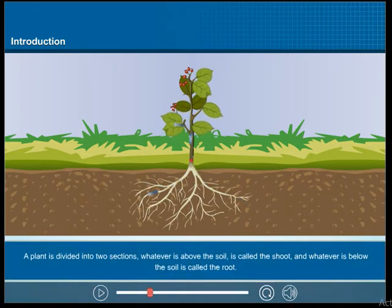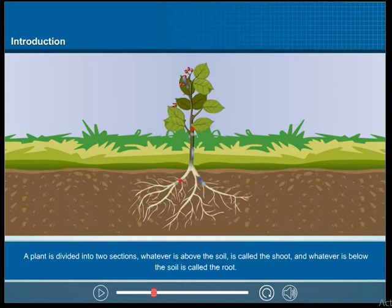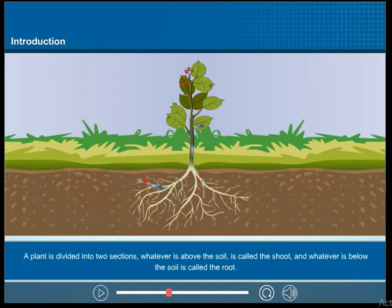A plant is divided into two sections. Whatever is above the soil is called the shoot, and whatever is below the soil is called the root.